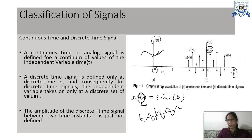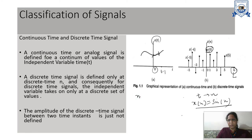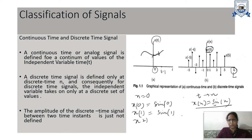Now if we replace t by n, the discrete time signal can be written as x[n] = sin(n). To draw this waveform, put n=0 to get x[0] = sin(0), then n=1 to get x[1] = sin(1), then x[2] = sin(2), and so on — whatever values come, you draw them on the axes.